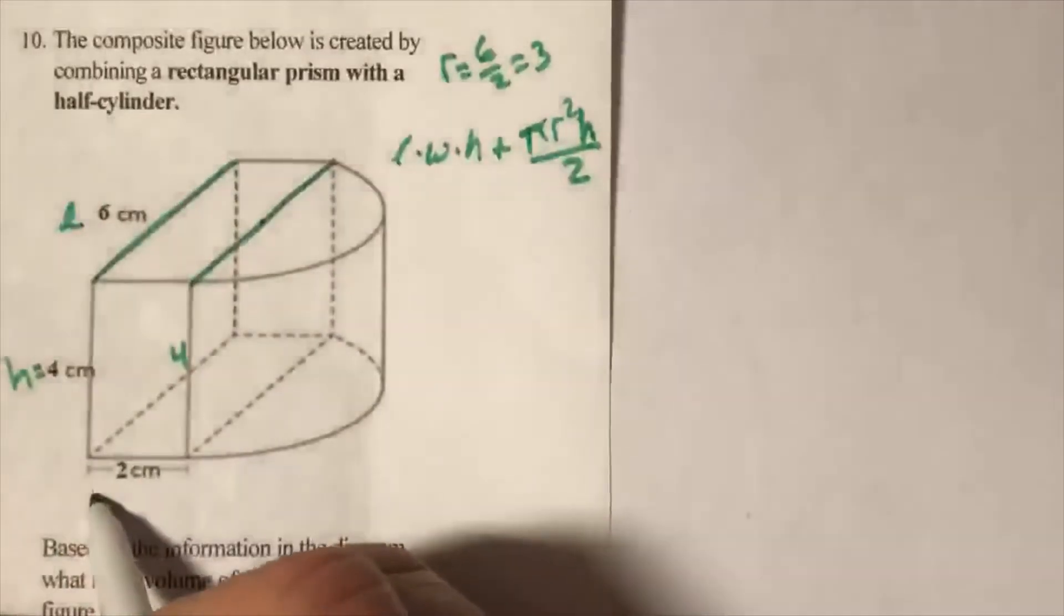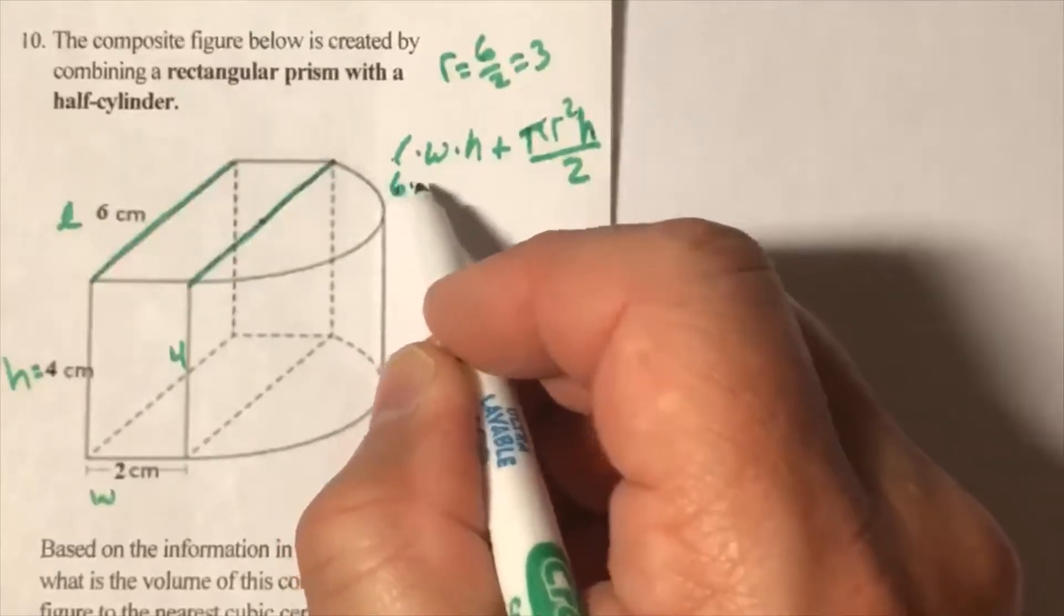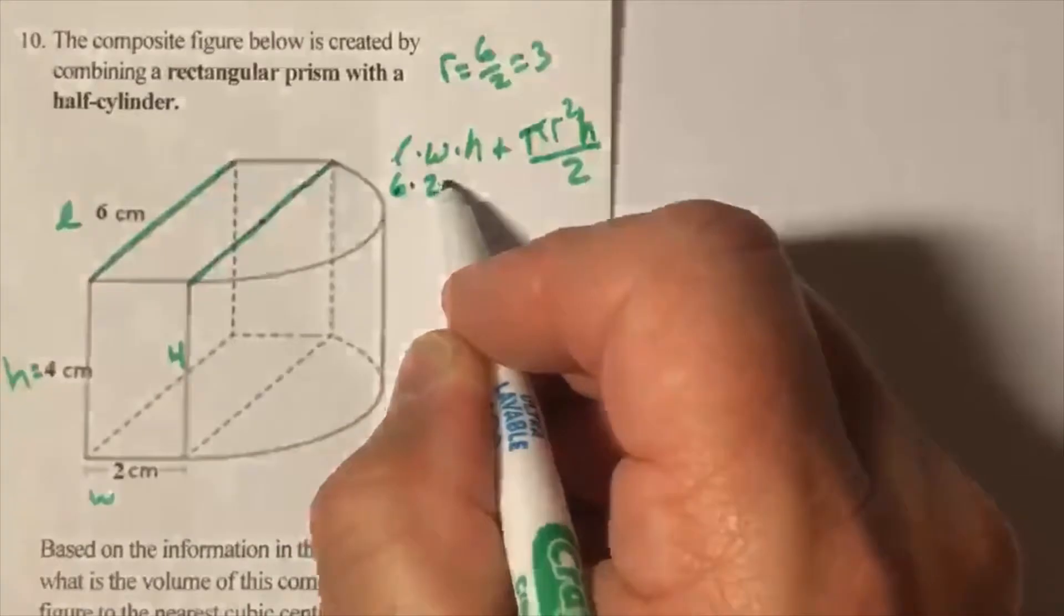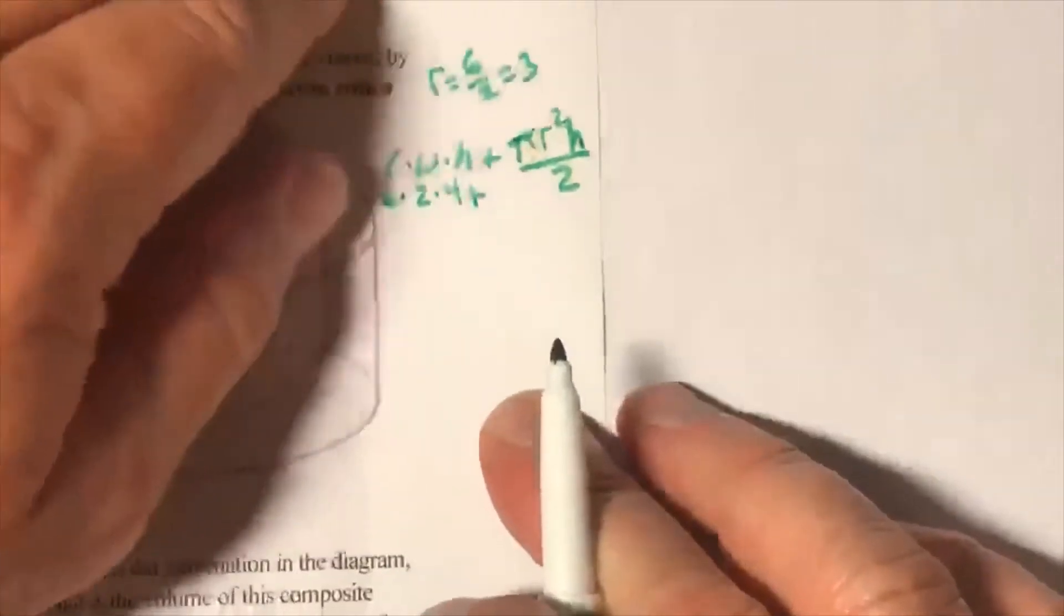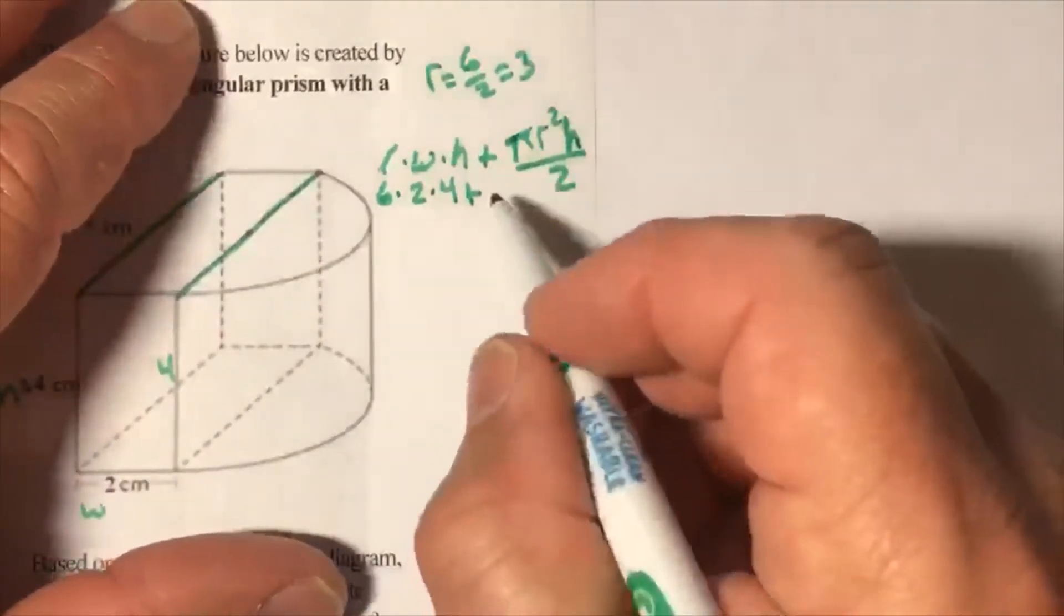So length, and this is my width. So 6 times 2 times 4 plus. Okay.